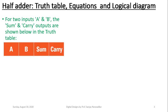There are four columns: variable A and variable B as inputs, then sum and carry as the two outputs. Initially, whenever inputs A and B are both 0, using the binary addition rule, 0 plus 0 gives sum equal to 0 and carry equal to 0. Then when A is 0 and B is 1, 0 plus 1 gives sum equal to 1 and carry equal to 0.